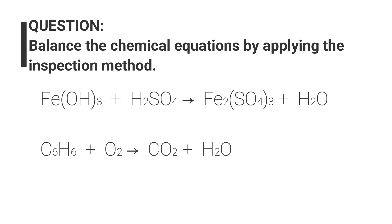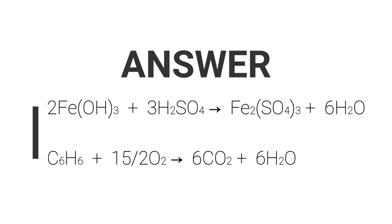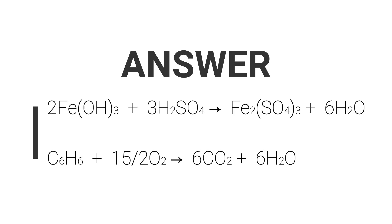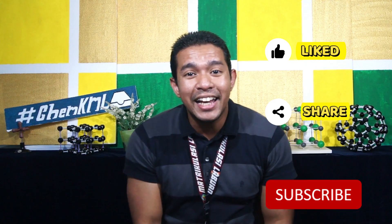Two examples have been shown to you. Next, I have prepared some questions for you to try — pause this video for a while, give it a try, and I'll give the answer in a bit. I have shown you two examples of how to balance a chemical equation using the inspection method, and I have given you two questions to practice. I really hope you give it a try and practice hard. If you like this video, please like, share, and subscribe. Till then, see you. Bye bye.